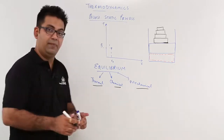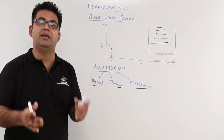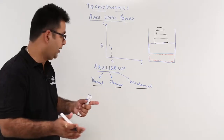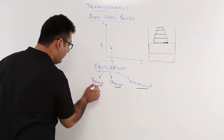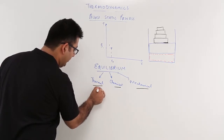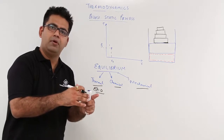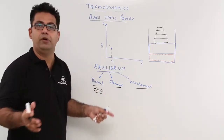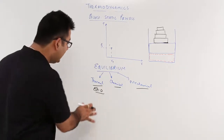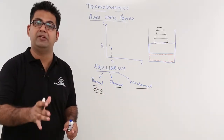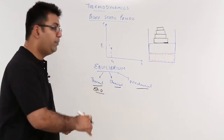Equilibrium in a nutshell means balance. Thermal equilibrium means that the temperature difference between two bodies is zero. Both the bodies — or any number of bodies — are all at the same temperature. So the delta T is zero; there is no temperature difference between the bodies or between the systems.